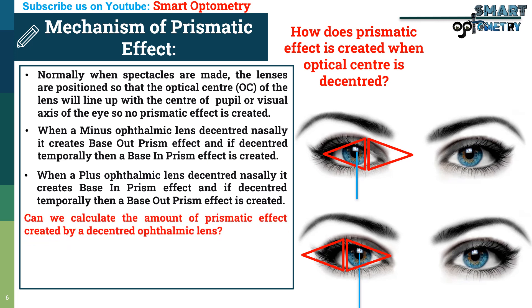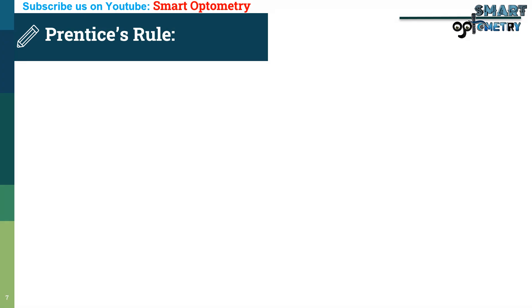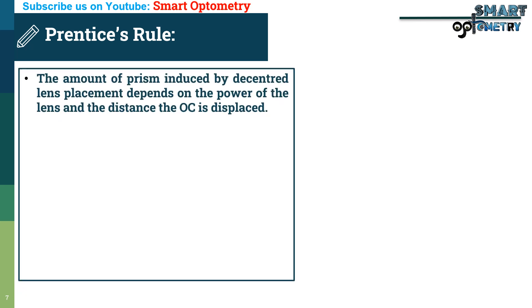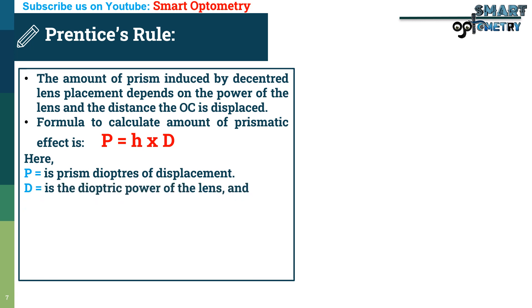Now, another question comes: can we calculate the amount of prism effect created by a decentered ophthalmic lens? Yes, we can calculate the amount of prism effect of a decentered lens using Prentice's rule. According to Prentice's rule, the amount of prism induced by a decentered lens depends on the power of the lens and the distance the optical center is displaced. The formula is: P equals H multiplied by D, where P is prism diopters of displacement, D is the dioptric power of the lens, and H is the amount of displacement of the optical center in centimeters.